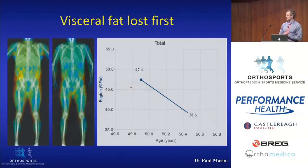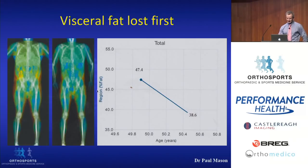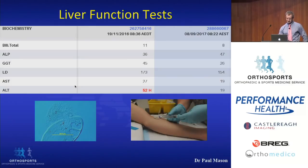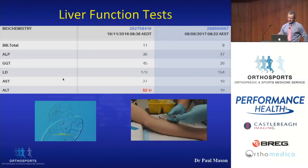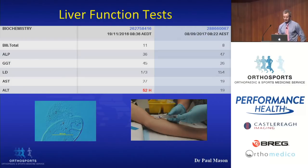These are serial DEXA scans of one of my patients from the weight loss clinic. Looking at the left-hand one, you can see a lot of fat accumulation in the region of the liver. After 9% body weight loss and six months later, we can see this is essentially resolved. We can also do blood tests after people have lost weight to see whether that demonstrates an improvement in liver function.